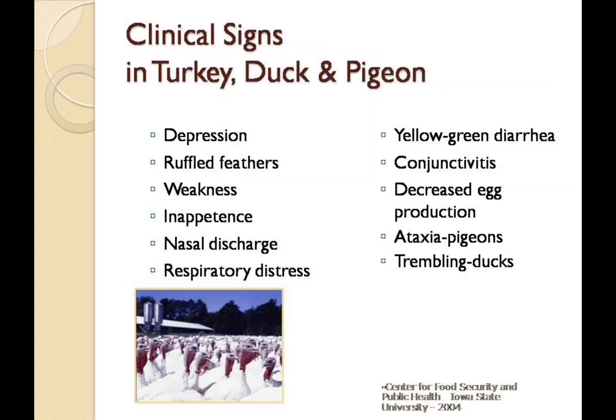Clinical signs in turkeys, ducks and pigeons include depression, ruffled feathers, weakness, inappetence, weight loss, nasal discharge, respiratory distress, and yellowish-green or green diarrhea. Unilateral or bilateral conjunctivitis may occur. Egg production may decrease. Nervous signs may include transient ataxia in pigeons and trembling or gait abnormalities in ducks.